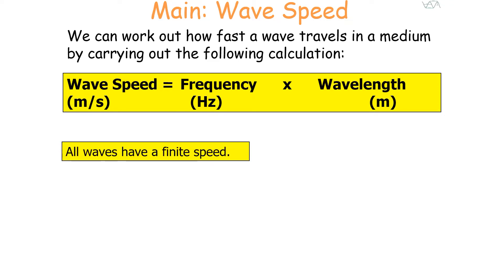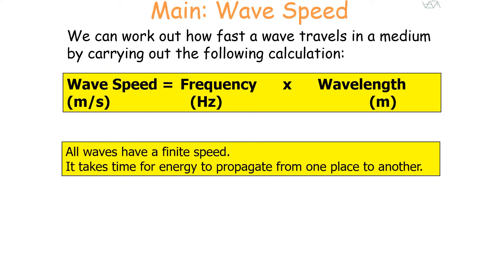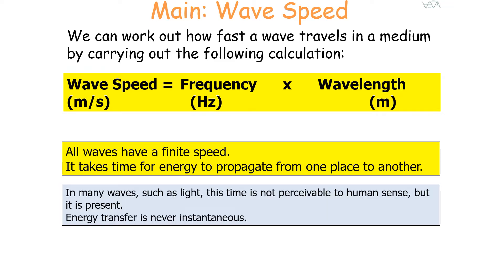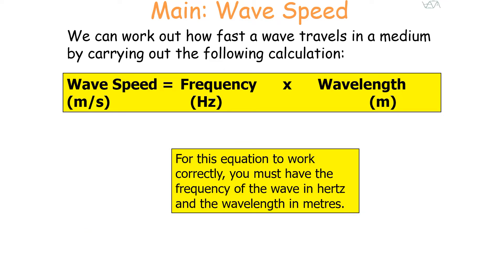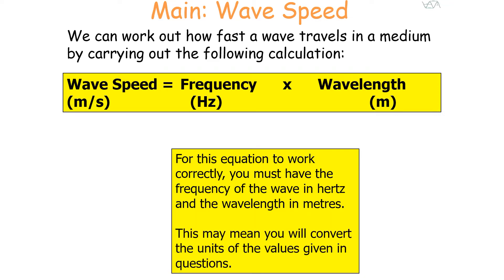It's important to note that all waves have a finite speed because it takes time for energy to propagate from one place to another. In many waves, such as light, this time is not perceivable to the human senses, but it is still present. Energy transfer in the universe is never instantaneous. For this equation to work correctly, you must have the frequency in hertz and the wavelength in meters, which may mean you have to convert the units of values given to you in questions.